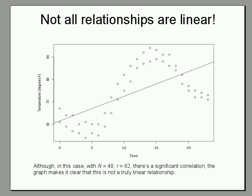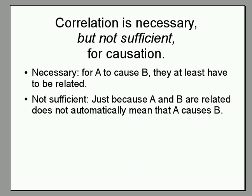The most important thing to know about correlation is that correlation is necessary but not sufficient for causation. By necessary, I mean if A causes B, they have to at least be related — if A and B aren't related, there's absolutely no way that one can cause the other. By not sufficient, I mean just because A and B are related does not automatically mean that A causes B or B causes A.